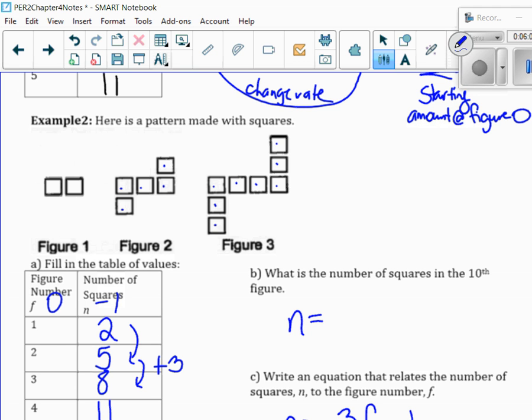So, if I want to find the number of squares in the 10th one, that would be 3 times 10, for the figure number, subtract 1. So, that is 30, subtract 1, which gives me 29.